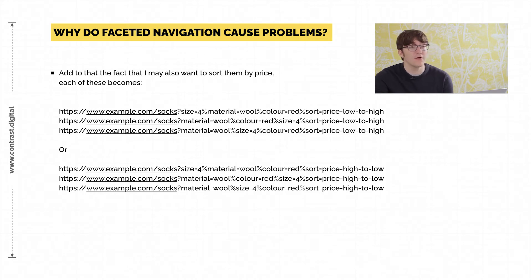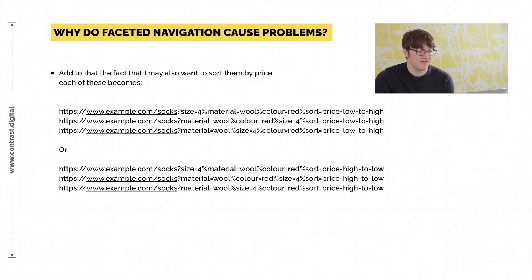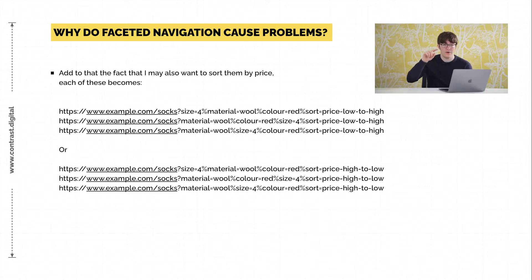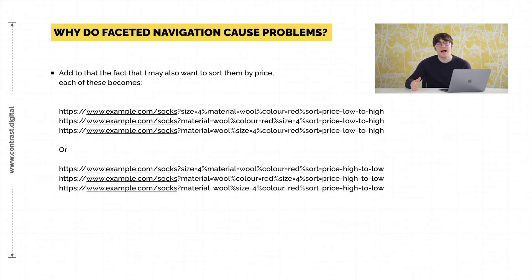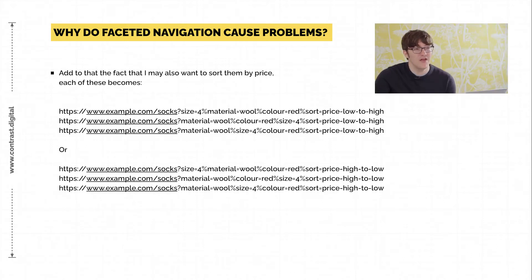We could then combine other faceted searches — such as price — with all of those same queries, whether that's price high to low or low to high. As you can see, so many new pages are created off the back of faceted navigation, which is ultimately like duplicate content and is going to cause issues.